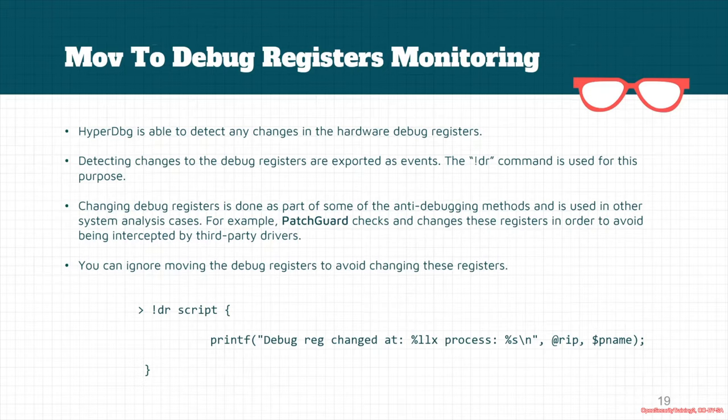I'm not sure if PatchGuard still checks the debug registers or not, but in cases like this we could use the DR command. Or, for example, if we want to bypass some anti-debugging methods, anti-reversing, or anti-virtualization methods.